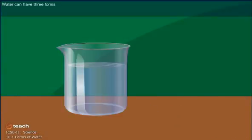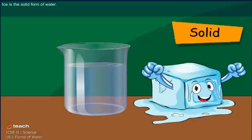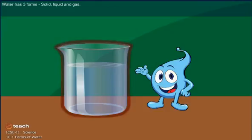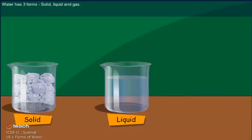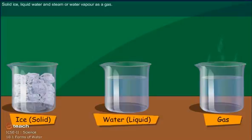Water can have three forms. The water that we drink is in the liquid form. We love ice in our cold drinks — ice is the solid form of water. Water can also be found in the form of a gas called steam or water vapour. So water has three forms: solid, liquid, and gas — solid ice, liquid water, and steam or water vapour as a gas.